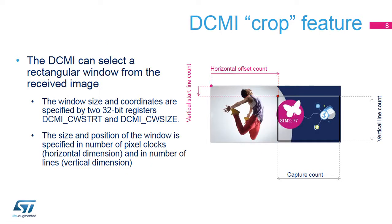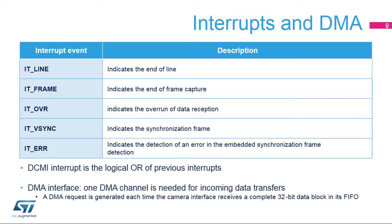Cropping is another way to reduce the image size, in addition to reducing the pixel resolution as mentioned previously. This option is valid for both single frame capture and in continuous mode, but is not supported for JPEG format. Five interrupts are generated, and all interrupts are maskable by software.